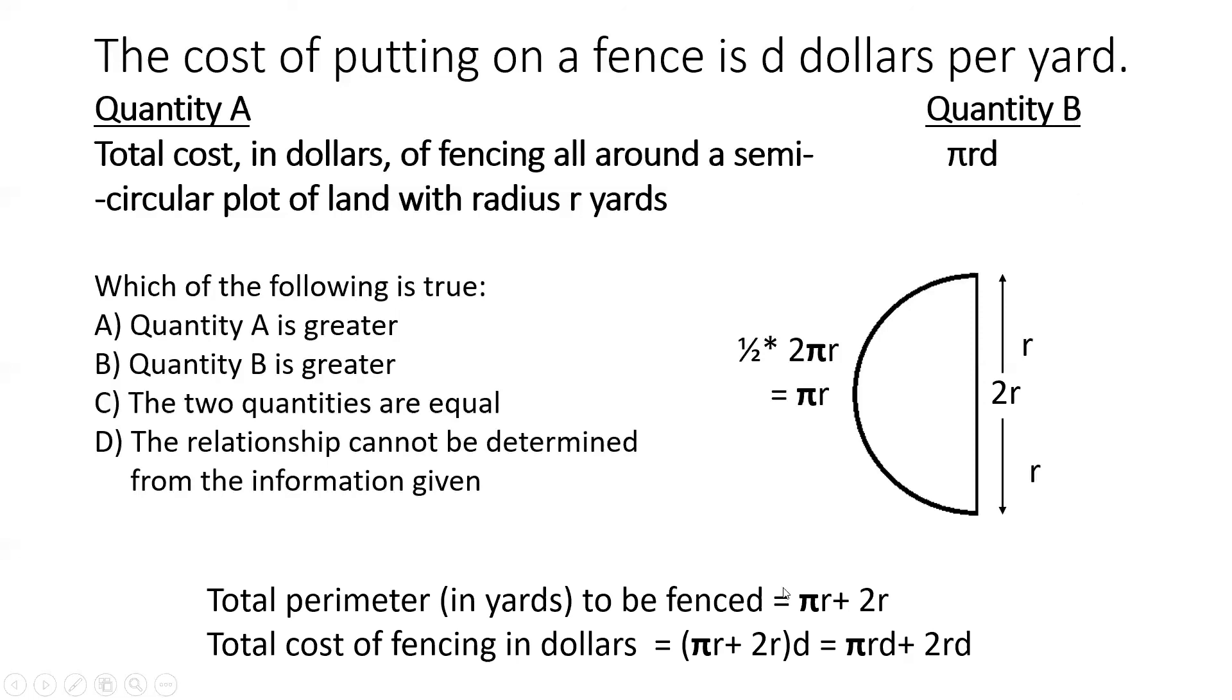So now if you look at quantity B in the question, so that's just pi R D. So clearly the cost of fencing in dollars is greater than the quantity B. So quantity A is greater will be the correct choice in this particular question.